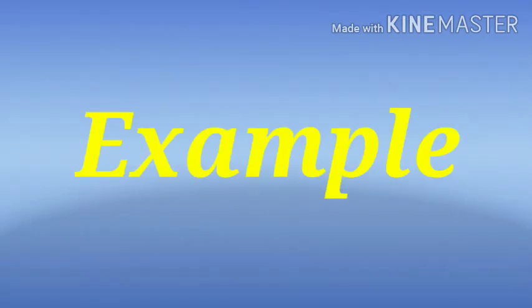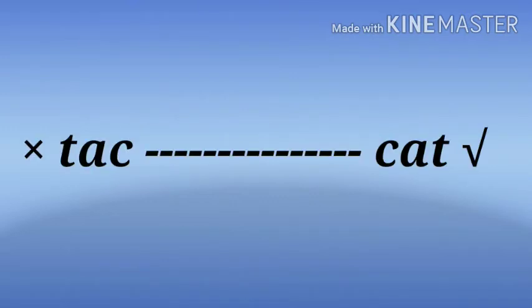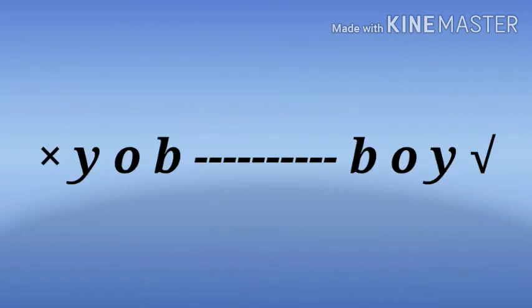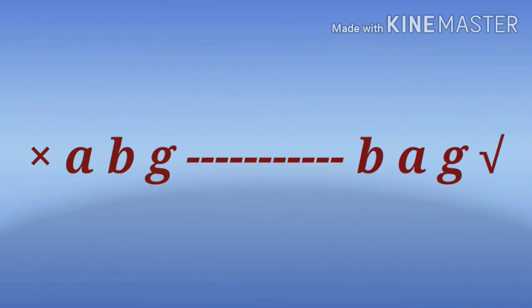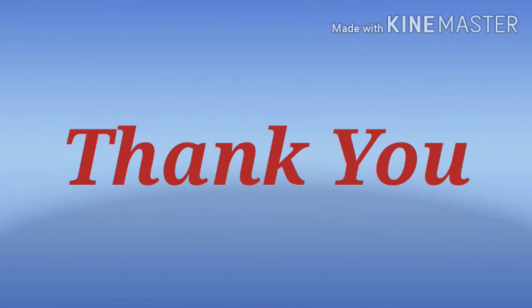Now we will solve some examples. T-A-C has no meaning, but C-A-T — Cat — it is having meaning. Second one, Y-O-B has no meaning, but B-O-Y — Boy — is a correct word. A-R-C has no meaning, but C-A-R — Car — it is a vehicle name. A-B-G has no meaning, but B-A-G — Bag — it is having meaning. In this way, we arrange letters in a proper way to denote a meaning, and that is called a word.